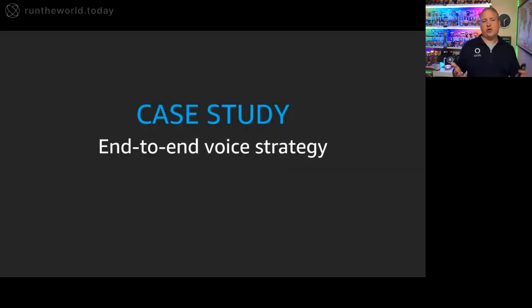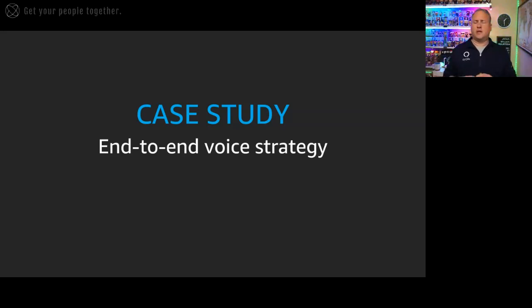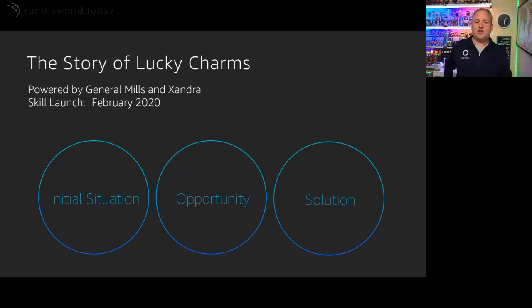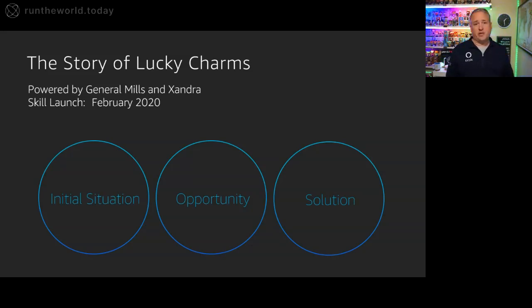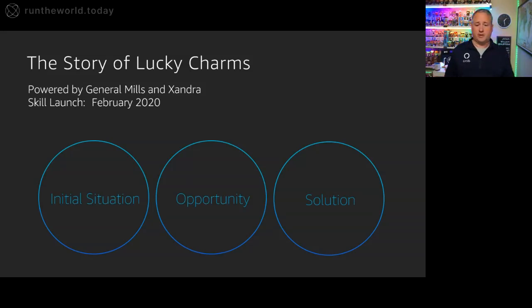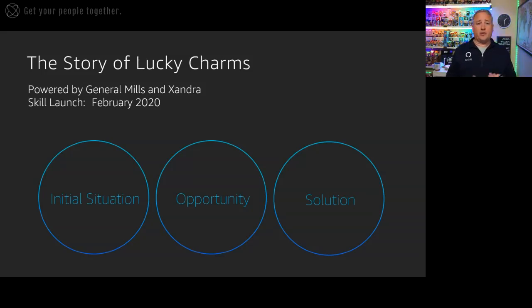I want to do a quick case study — an example of a way that General Mills actually did something like this with an end-to-end voice strategy. We're going to talk about Lucky Charms. They took an interesting approach to how you want to think about interacting with voice. The first thing they did was elevate their presence and drive association between St. Patrick's Day and Lucky Charms — you've got this Irish leprechaun and this delicious cereal, and they wanted to drive all of those associations together. The opportunity they had was to use cutting-edge technology to unleash their imagination and give a one-of-a-kind story-building experience for their customers, which are primarily children, though certainly their parents have a big role in buying the cereal.